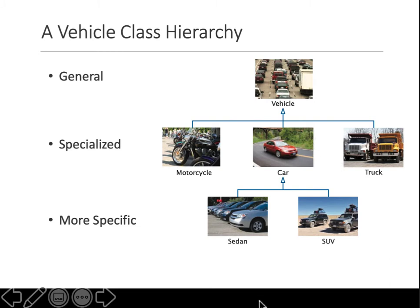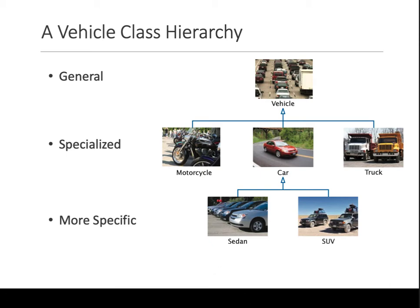That's the purpose of specialization and code reusability — you write the properties and methods once in the vehicle class and use them in all subclasses. An SUV is a vehicle, a sedan is a vehicle, so any methods defined for a car will be accessible in the subclasses of SUV and sedan.